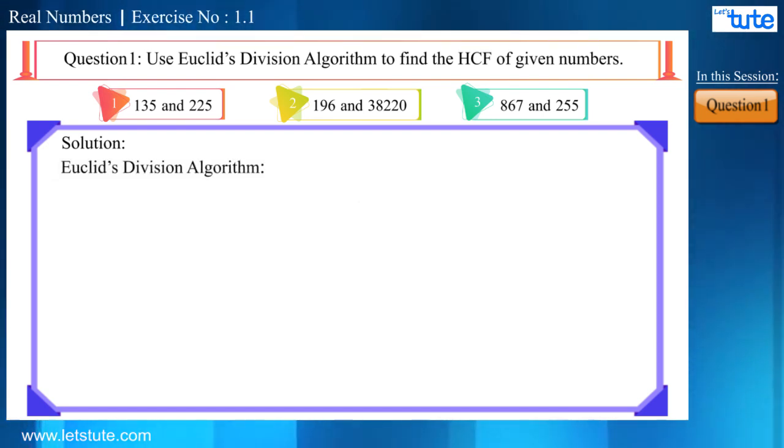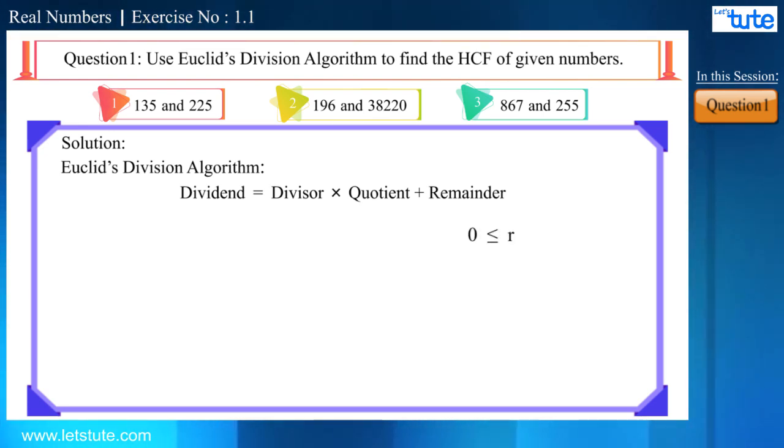In the Euclid division algorithm, we can write dividend equal to divisor into quotient plus remainder. There is one condition for this, that is the remainder will always be 0 or greater than 0 and will always be smaller than the divisor. Here, A is a dividend, B is a divisor, Q is a quotient and R is the remainder.